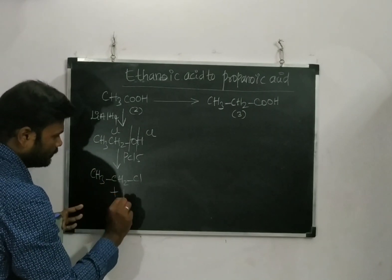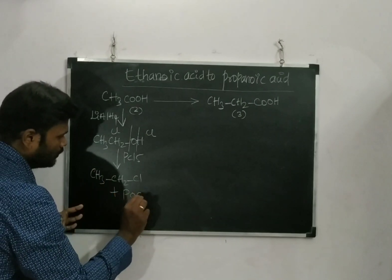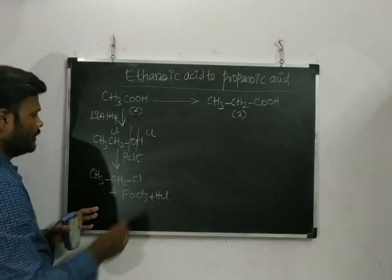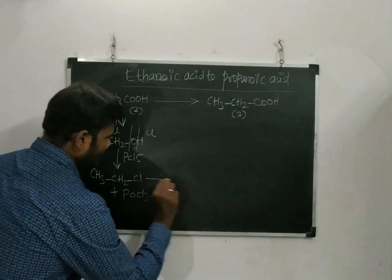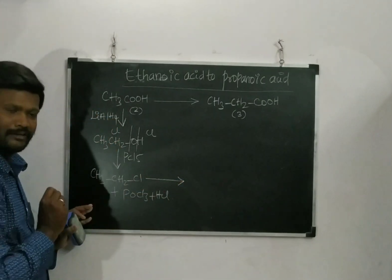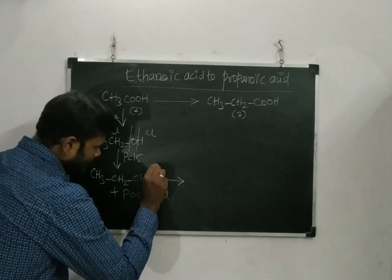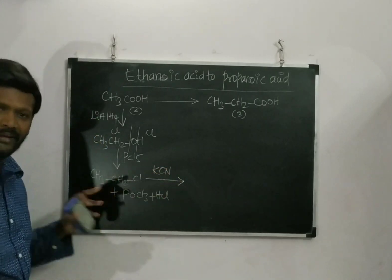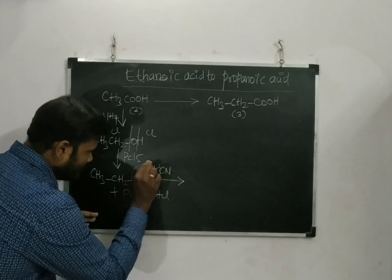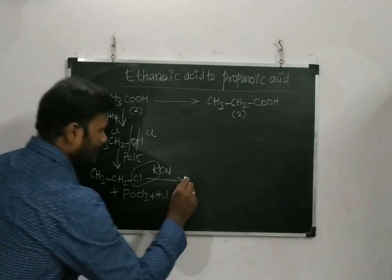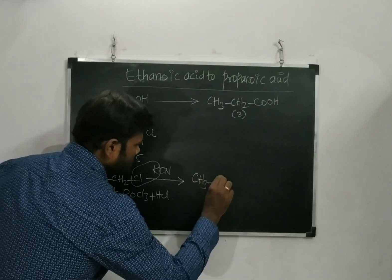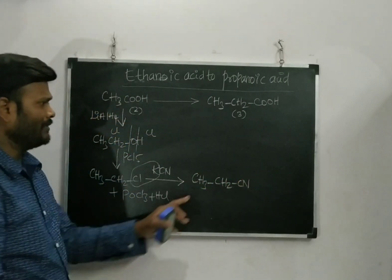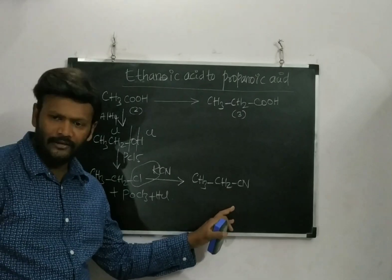Along with that product, I also get POCl3 with HCl as byproducts. Now I got ethyl chloride as my product. Once I got ethyl chloride, I can add KCN. So KCl is getting eliminated and I will be getting a product that is CH3, CH2, CN.